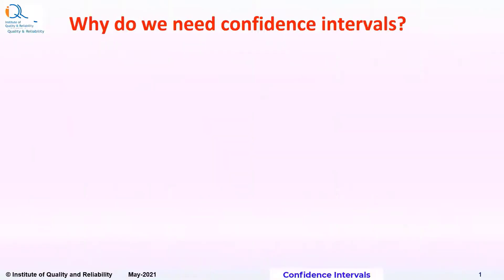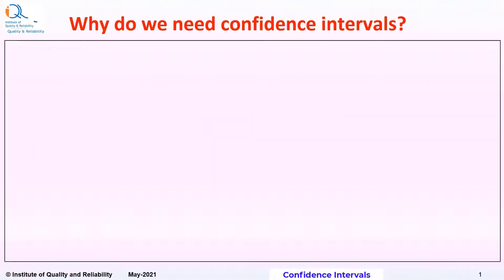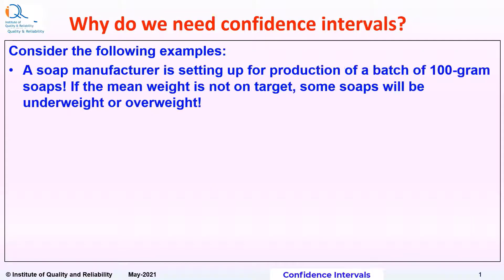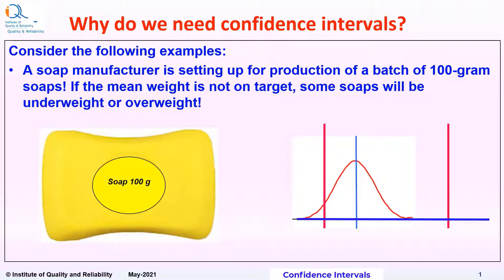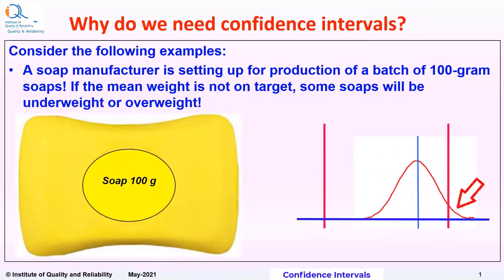But why do we need confidence intervals in the first place? Consider the following examples. A soap manufacturer is setting up for production of a batch of 100-gram soaps. If the mean weight is not on target, some soaps will be underweight or overweight.